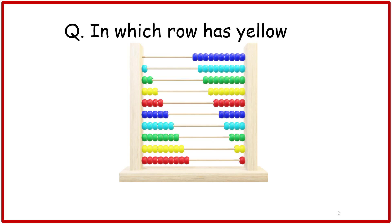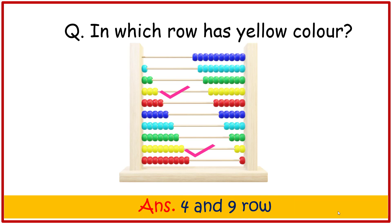Question. In which row has yellow color? Four and nine rows have yellow color.